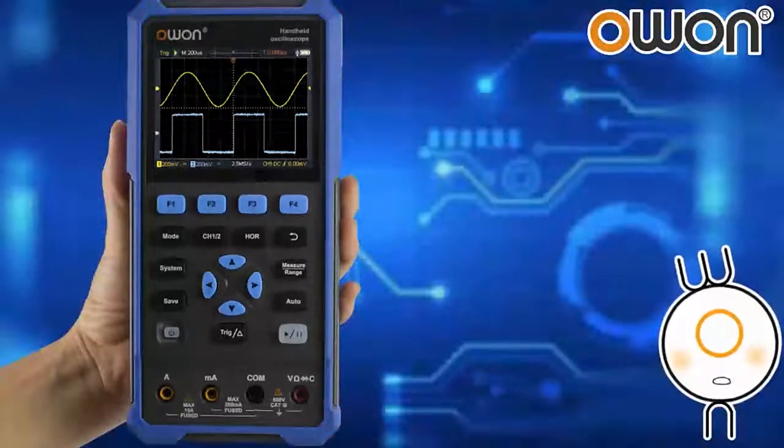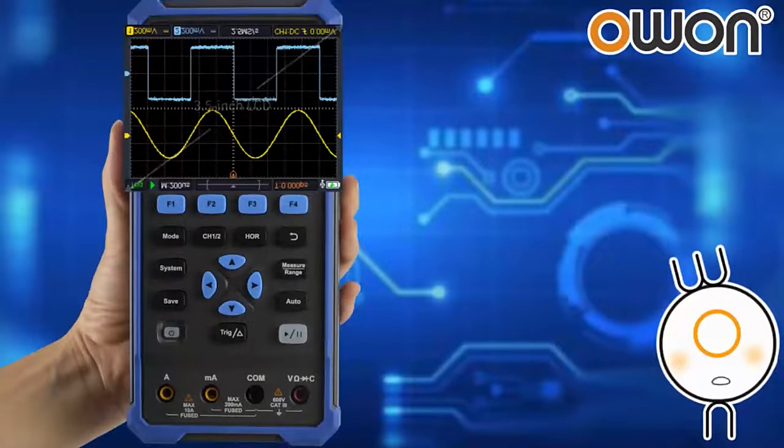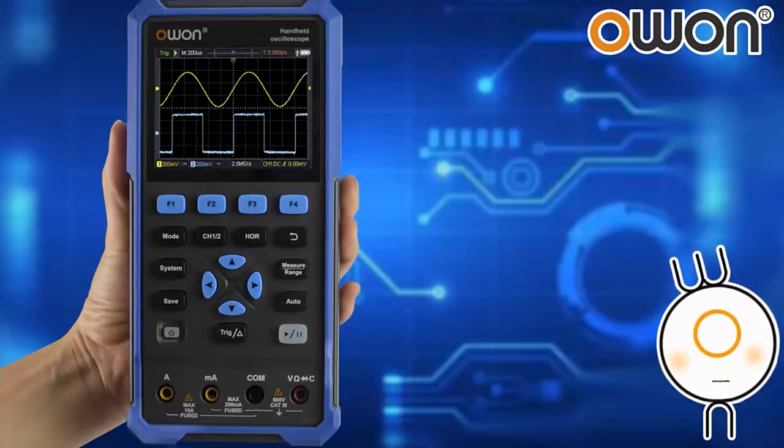The HDS200 Series uses a 3.5-inch LCD with clear display. The shell adopts an integrated design of rubber covering, which really feels nice in hand and not easy to peel off after long-term use.